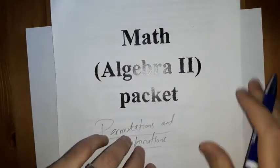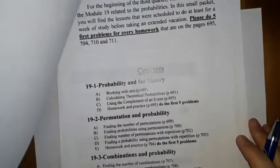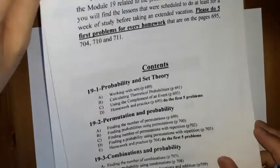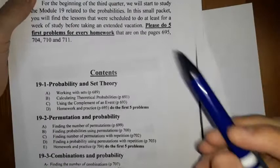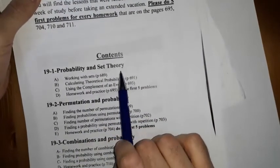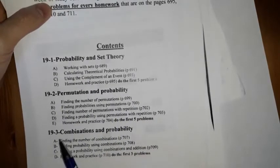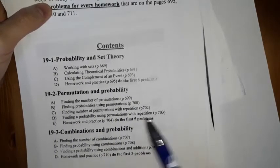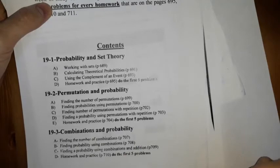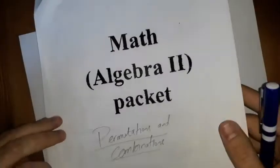Hello everyone. The content of the first packet deals with three essential elements. The first element is probability and set theory, the second is permutation and probability, and the third is combinations and probability. In this video we'll talk briefly about the key points of each of those three elements, which are well detailed in the packet.